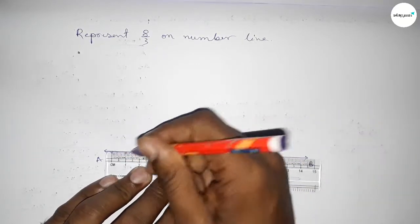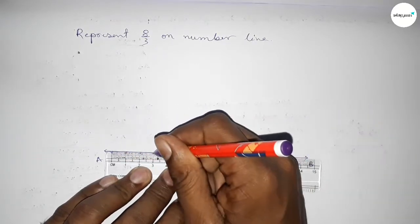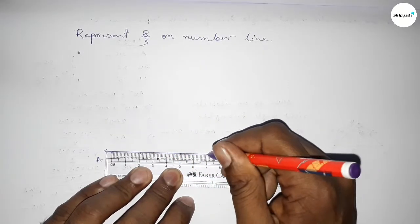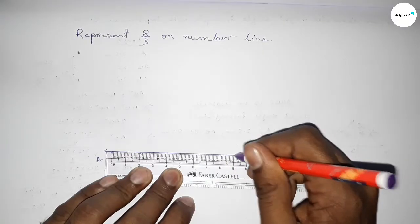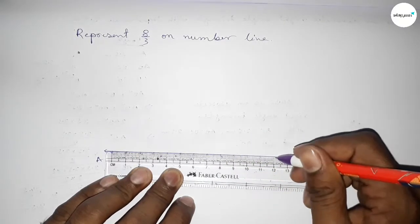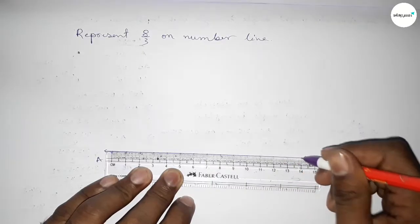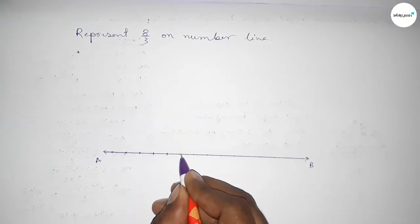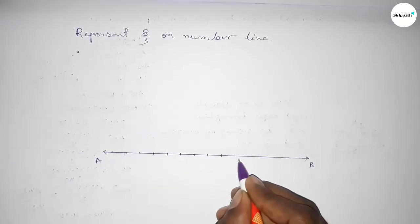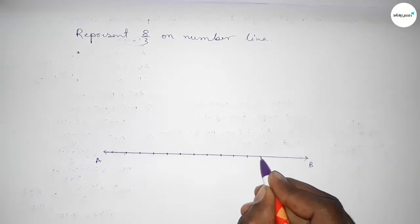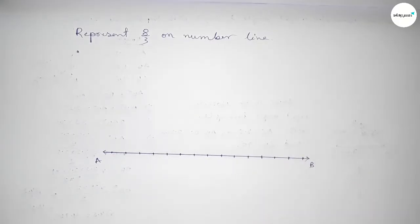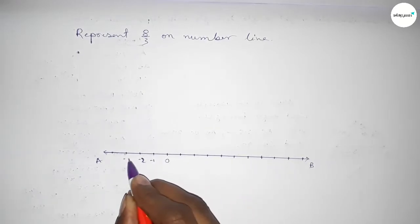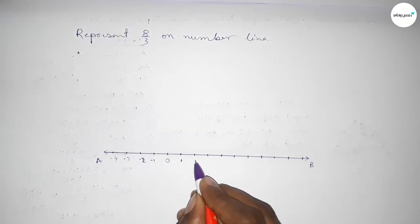First we have to mark the numbers on the line using a scale. Marking the numbers again with deep color to understand perfectly. The starting number is 0; on this side minus 1, minus 2, minus 3, minus 4, and on the other side 1, 2, 3, 4, 5, 6, 7, 8, 9, 10.